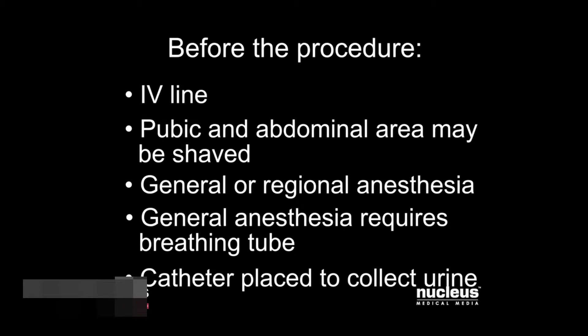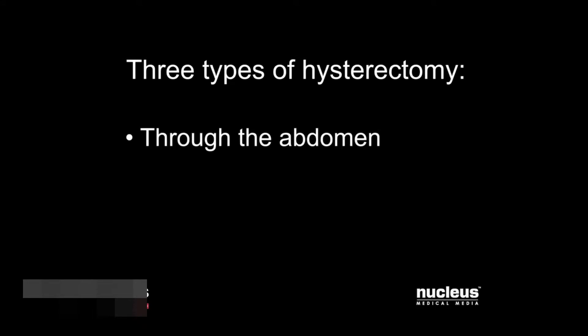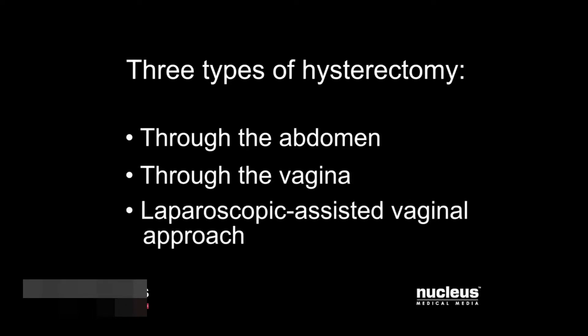A hysterectomy takes about one to three hours. There are three main ways to perform this surgery: through the abdomen, through the vagina, or using a laparoscope to assist a vaginal approach.